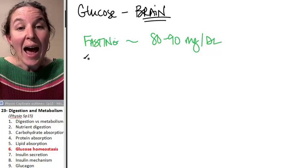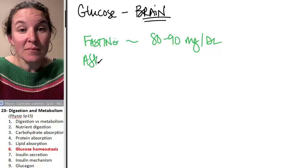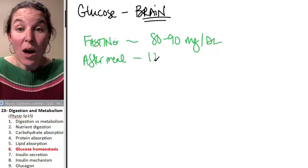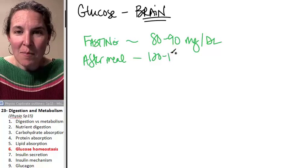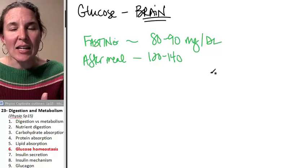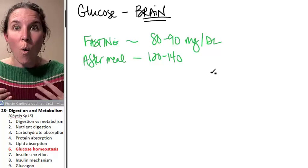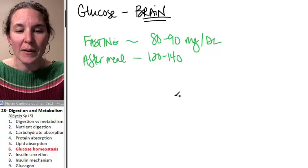So after a meal, your glucose levels go up, and does this not make sense? It's going to go up dramatically because you just absorbed a whole bunch of glucose into your blood.